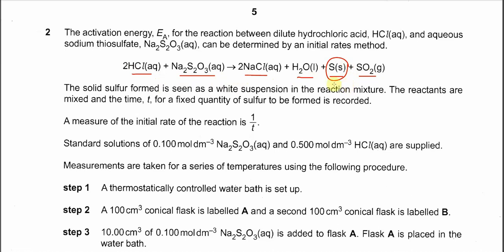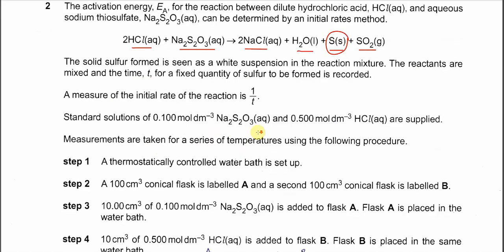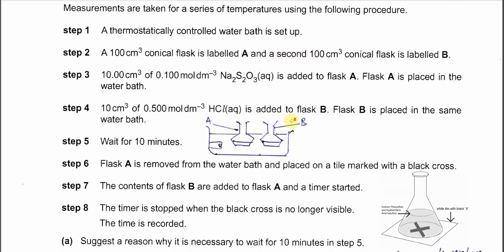The solid sulfur formed is seen as a white suspension. The reactants are mixed and the time t for a fixed quantity of sulfur to be formed is recorded. The measure of initial rate of the reaction is 1 over t. The concentration of thiosulfate is 0.1 mol/dm³ and HCl is 0.5 mol/dm³.